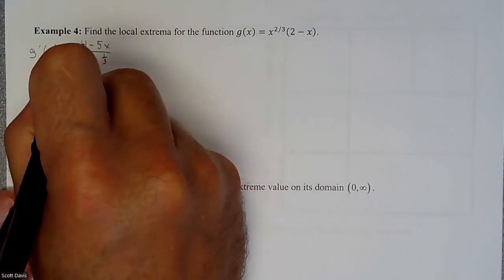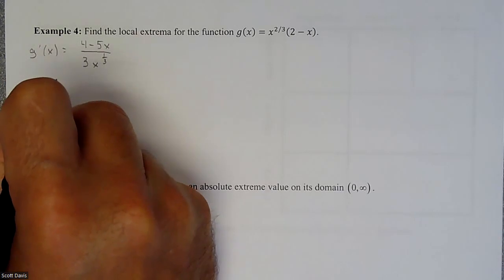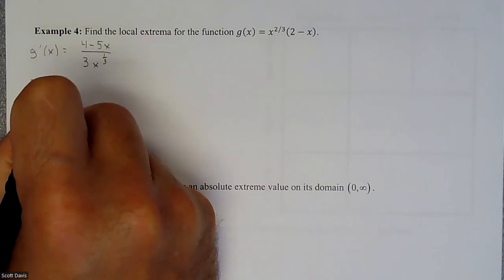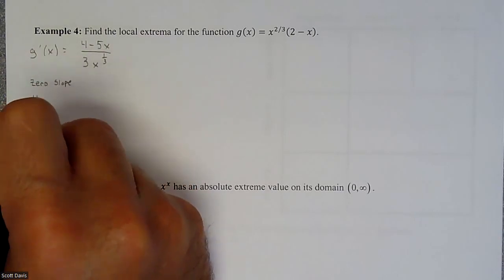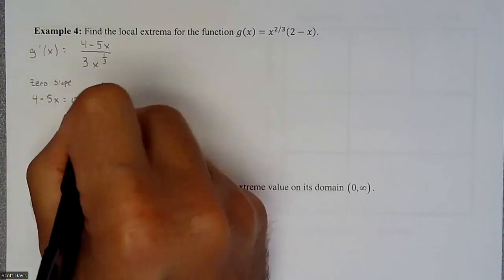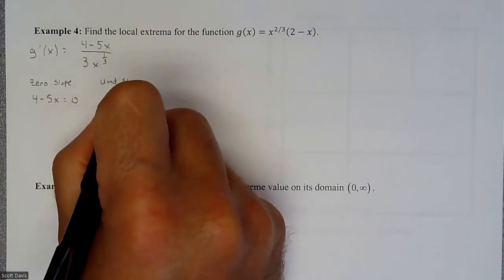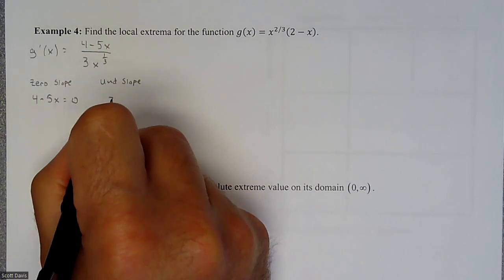So what we're going to do is we're going to figure out when the numerator is equal to zero. That's a zero slope. So we need to find out when we have a zero slope, which is taking the numerator and setting it equal to zero. And we need to find out when we have an undefined slope. And that is when we set the denominator equal to zero.